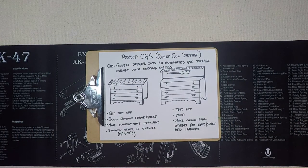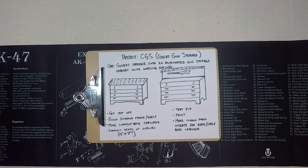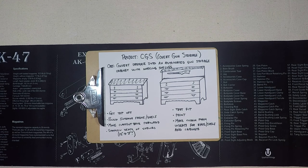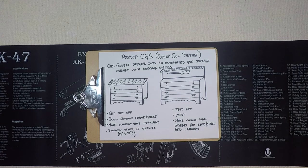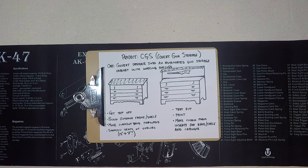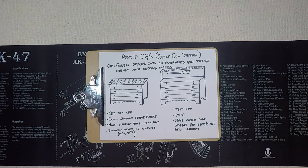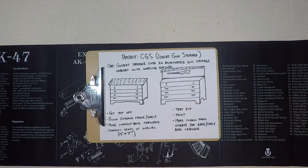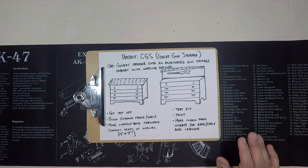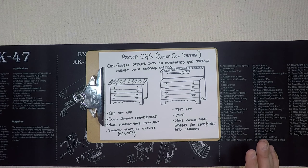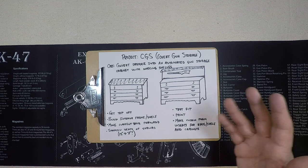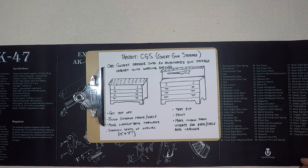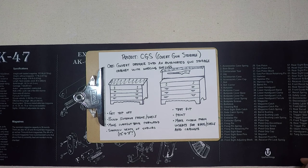We're calling this Project CGS, Covert Gun Storage. I'm sure a ton of you have seen this video on the internet already where a guy asks Alexa that he needs guns, and the cabinet opens with guns and the drawers open. I loved it. I'm not too keen on the Alexa part, but that's the easy part with a smart switch.